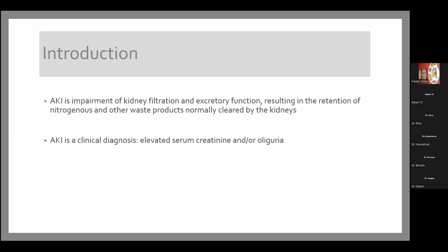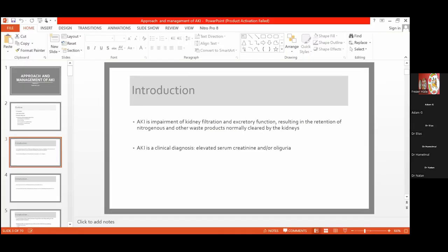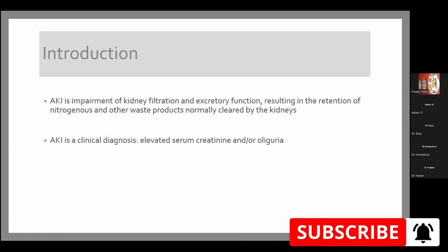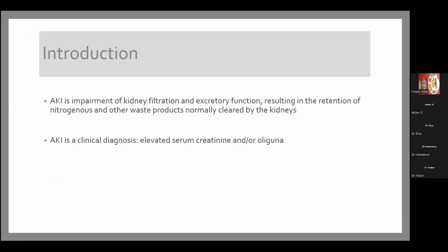Serum creatinine is not an ideal marker but it reflects GFR — unfortunately it's the only marker we have. Some patients may not have oliguria; for example, patients with drug toxicities such as antibiotic toxicities or interstitial nephritis may have non-oliguric acute kidney injury. Oliguric AKI carries a worse prognosis than non-oliguric AKI. In clinical practice, we see non-oliguric AKI in the setting of interstitial nephritis, usually antibiotic-induced interstitial nephritis.